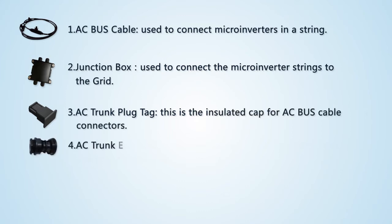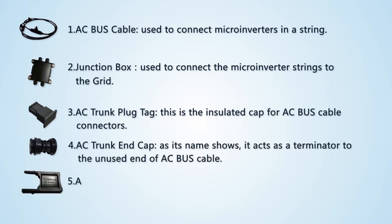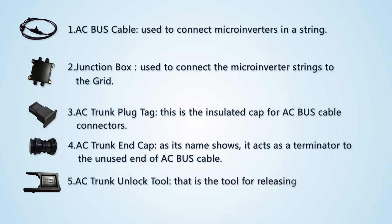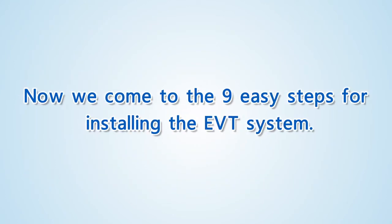Fourth, the AC trunk end cap — as its name shows, it acts as a terminator to the unused end of the AC bus cable. Fifth, the AC trunk unlock tool, which is the tool for releasing the connection between the AC bus cable and the microinverter. Now we come to the nine easy steps for installing the EVT system.